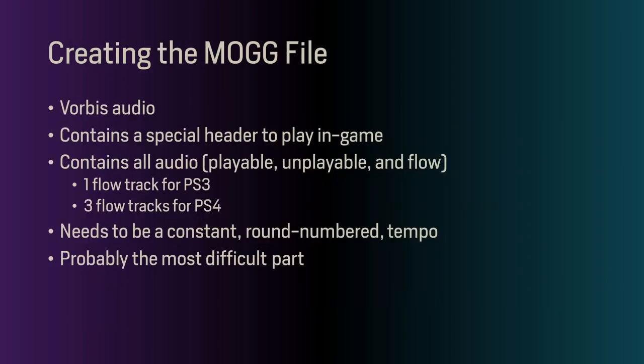The first thing we'll do is create a MOG file. This is a Vorbis audio container with a special header used for the game. It contains all the audio — playable, unplayable, as well as the flow tracks. There's one flow track for the PlayStation 3 and three for the PS4. The song you use will need to be a constant round-numbered tempo, and this is probably the most difficult part of the tutorial. If you're able to get through this, the rest will be a breeze.